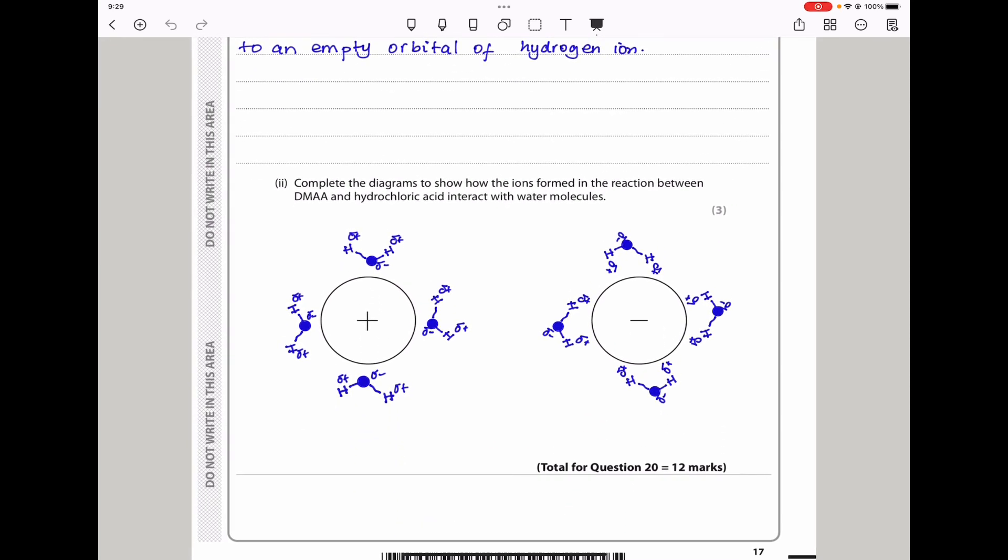They say complete the diagrams to show how the ions formed in the reaction between DMAA and hydrochloric acid interact with water molecules. We have the positive ion and the negative ion. Since water is polar, the oxygen atom of water is partially negative while the hydrogens are partially positive. The partially negative oxygen is going to be closer to the positive ion. I drew four surrounding the positive ion, and you can see it's the oxygens that are partially negative that are closer to the positive ion. On the other side, it's the hydrogens that are partially positive that I drew closer to the negative ion.